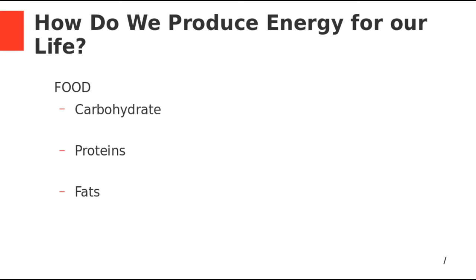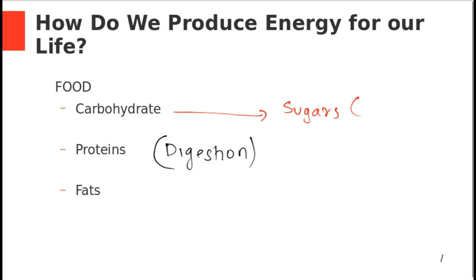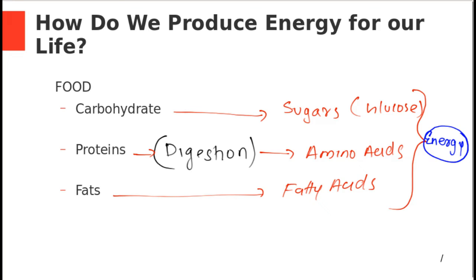Our food contains carbohydrates, proteins, and fats. When these food particles are digested: carbohydrates produce sugars — basically glucose; proteins are digested to produce amino acids; and fats are digested to produce fatty acids. These basics everyone must know. These things are later converted into energy, and today we'll discuss the details of that energy production. Sugar is the primary substrate for energy production, and amino acids and fatty acids are secondary substrates.